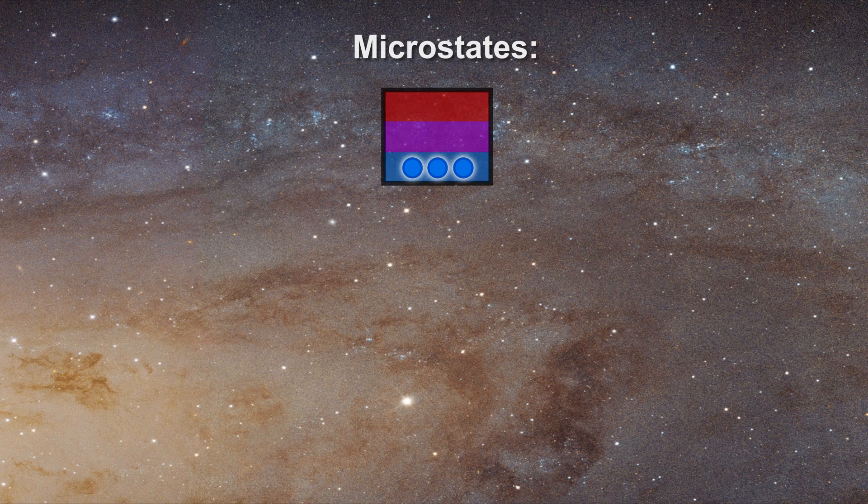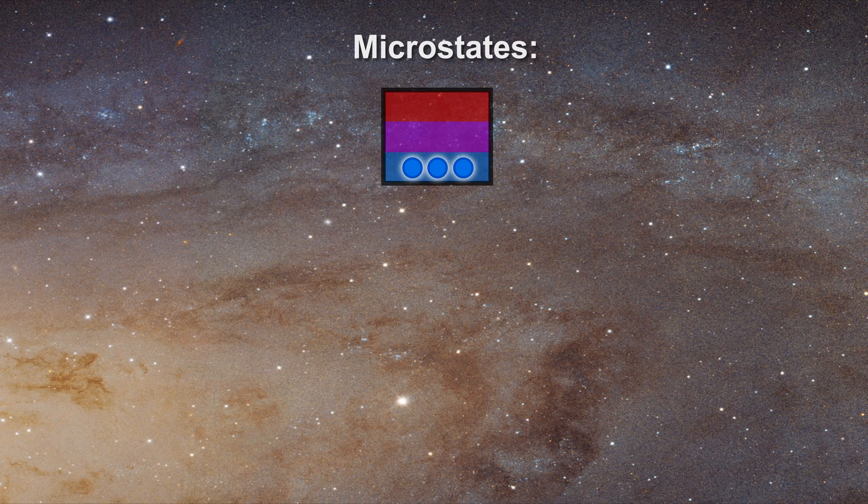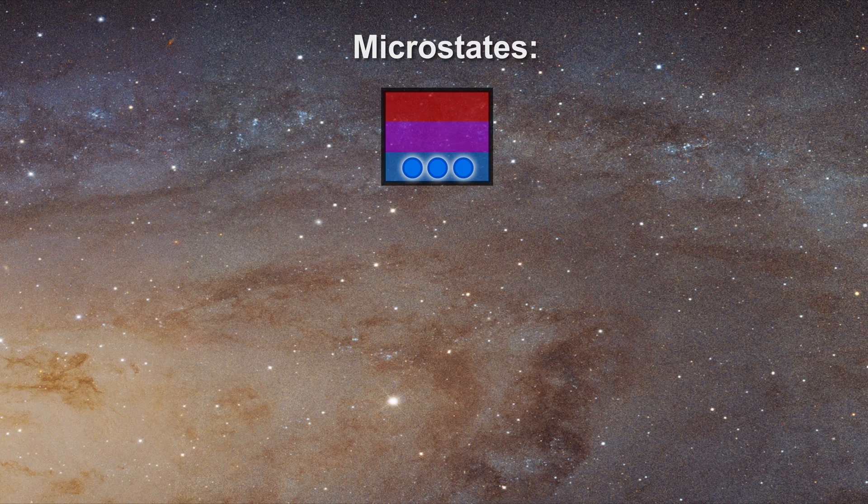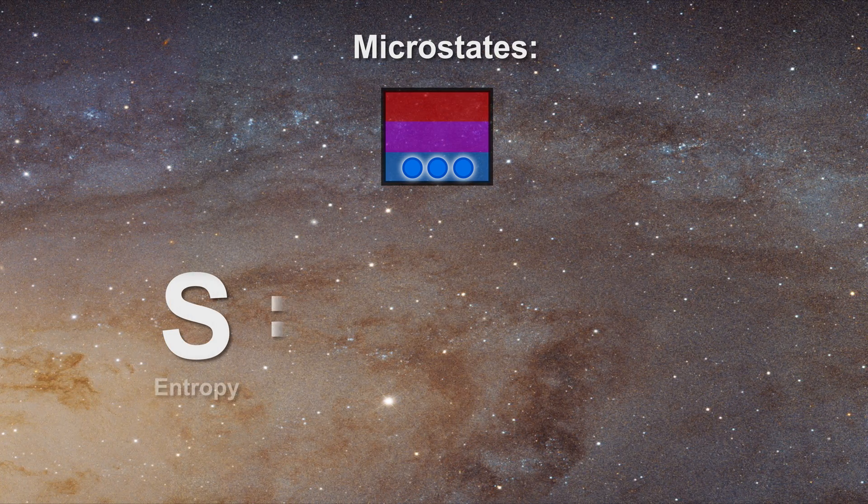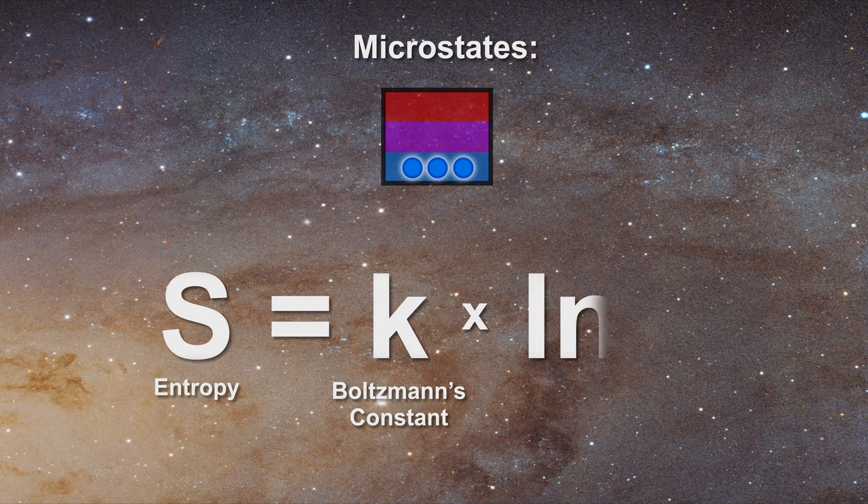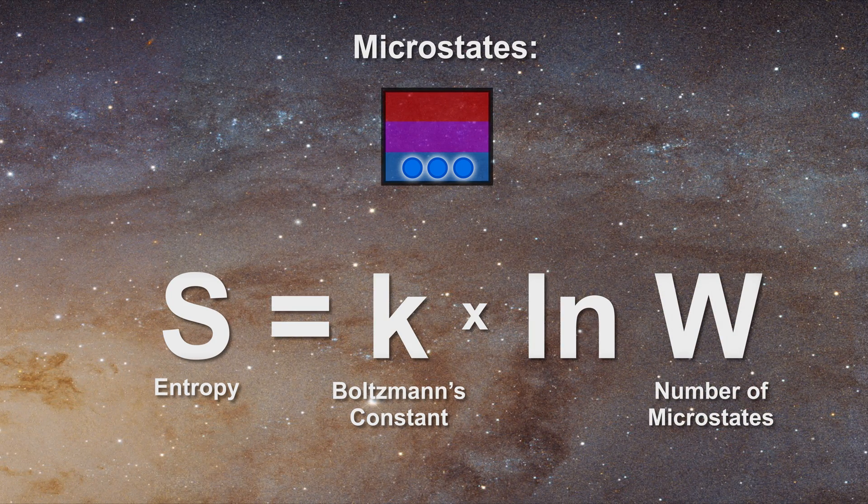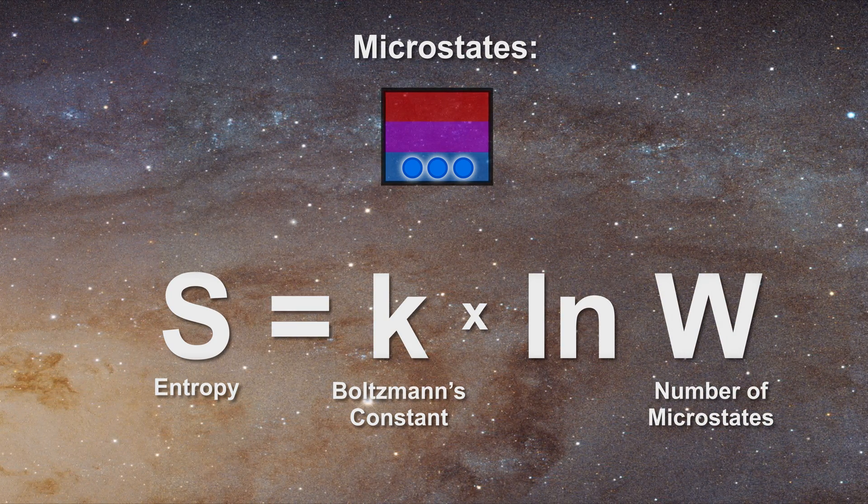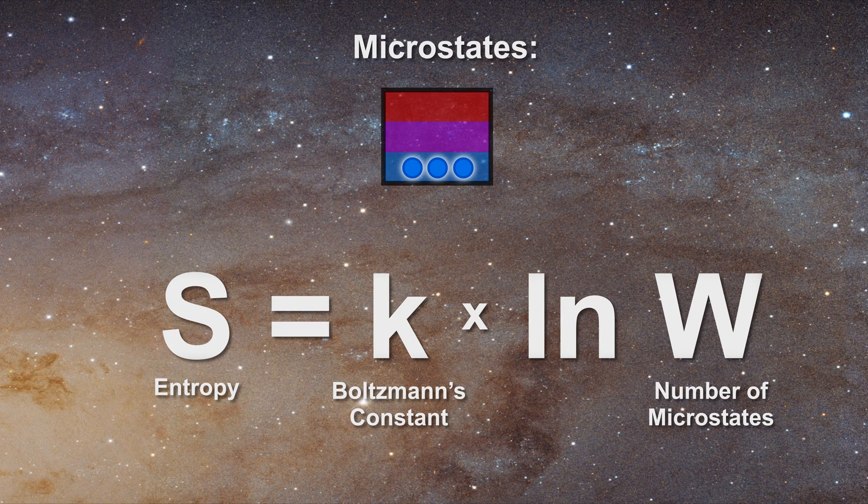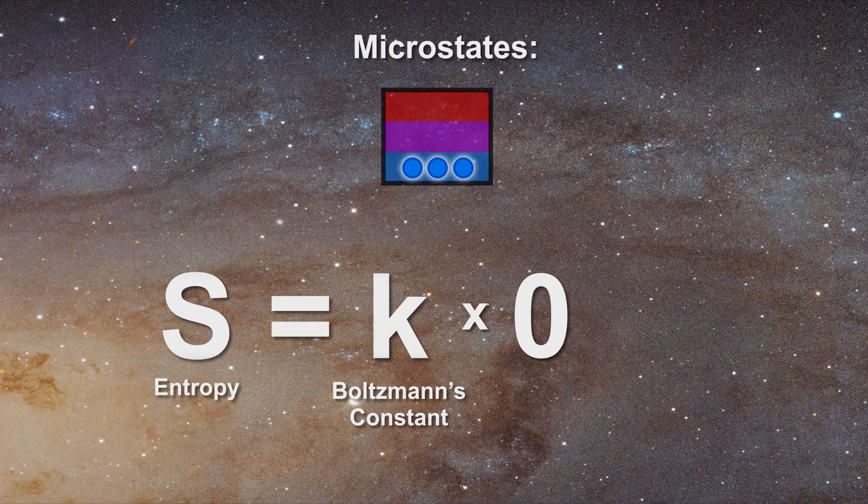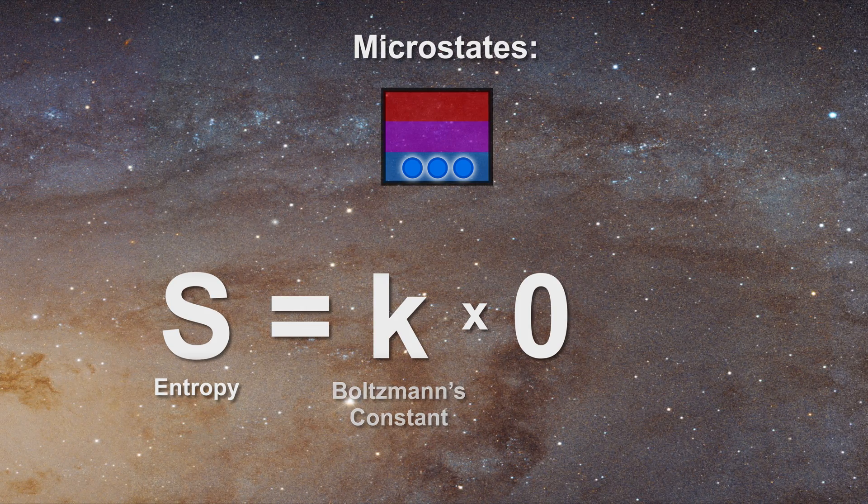There is a simple expression which can be used to calculate the entropy of a system. It states that entropy, S, is equal to Boltzmann's constant times the natural log of the number of equiprobable microstates. At absolute zero, we just learned that all the atoms must occupy the lowest microstate. Since the natural log of a single microstate is zero, then the entropy of the system is equal to zero.